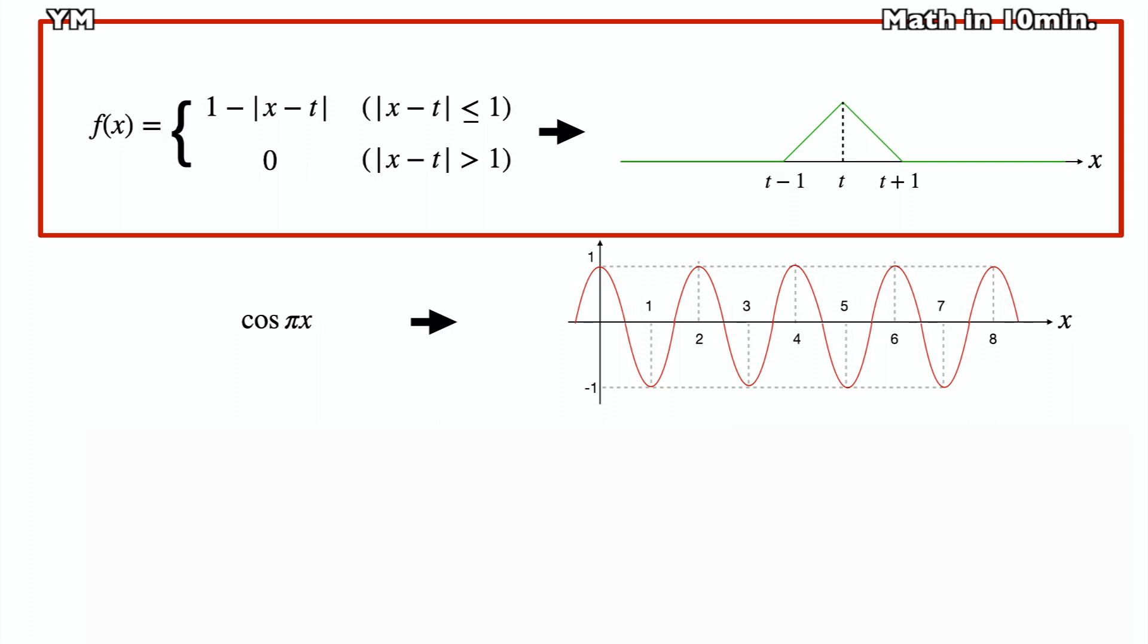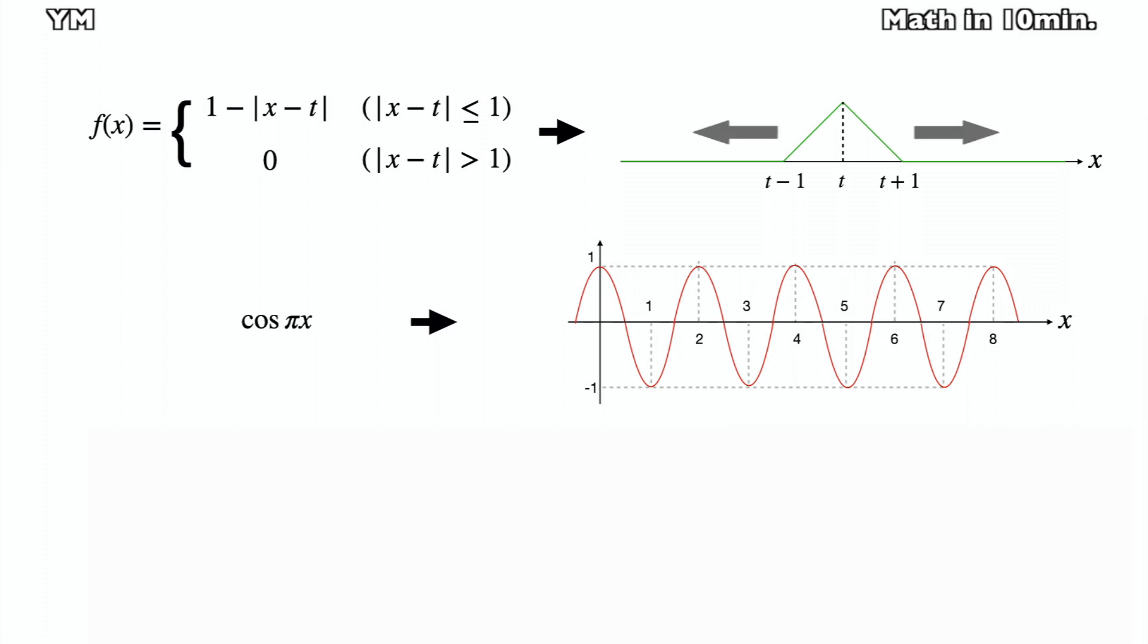fx will graphically look like the green one above. It is a continuous function which slope is 1 between t minus 1 and t, and negative 1 between t and t plus 1. It will also move left and right based on the value of t.